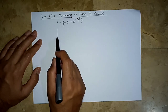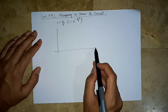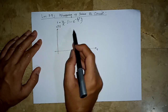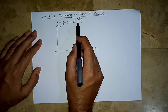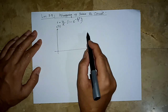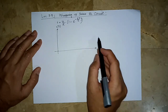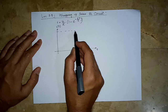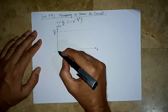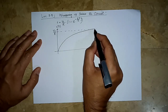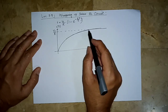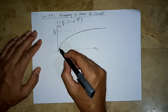Let us try to plot this to understand the behavior of the circuit. Against time, let us plot this current. This term is a decaying exponent but this is a constant. We know that it starts from 0 and as time becomes large, it ultimately saturates at the value V0 over R. So we get something like this — it saturates at this point. This is a rising exponent.